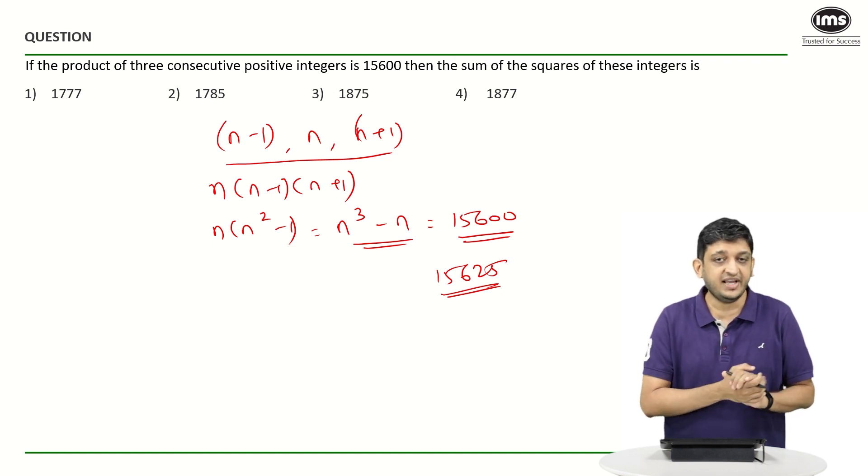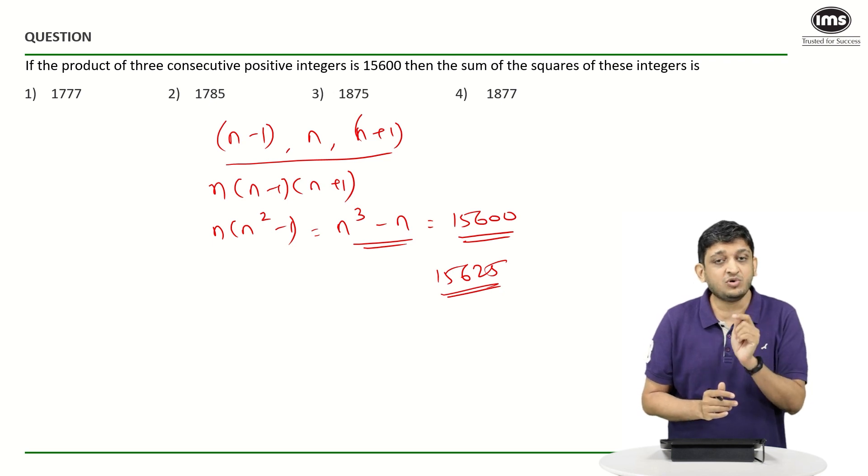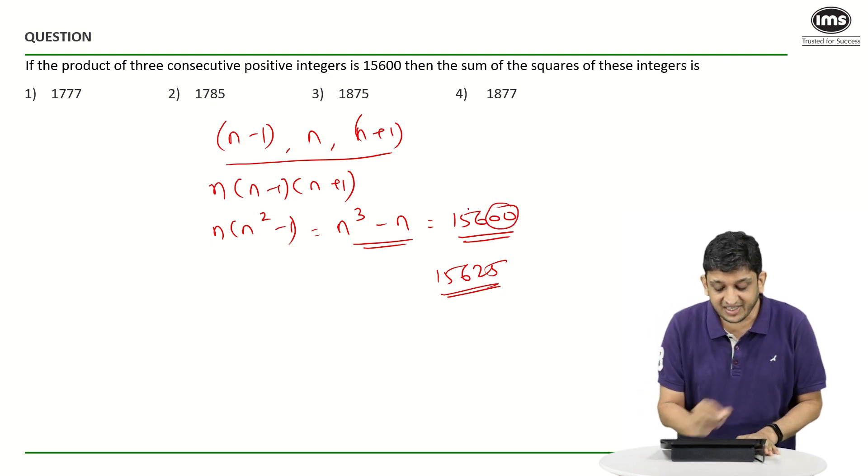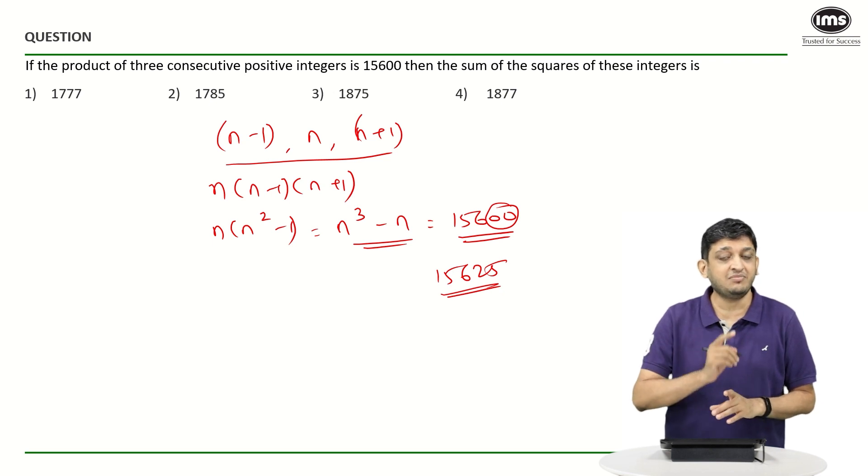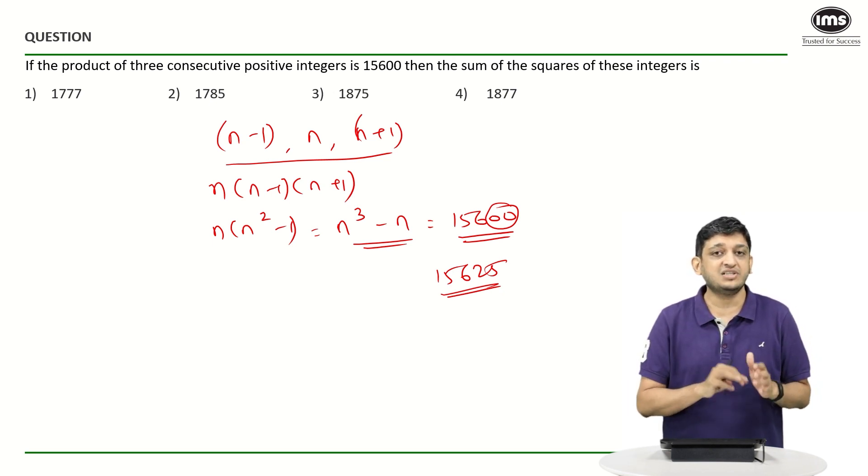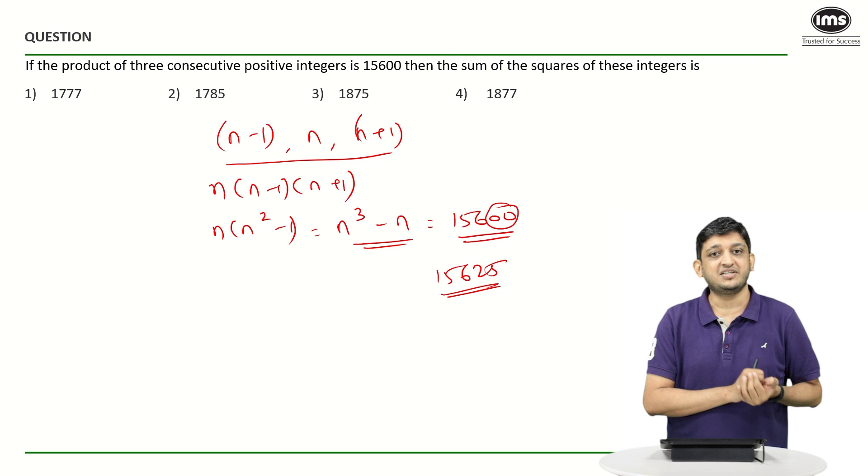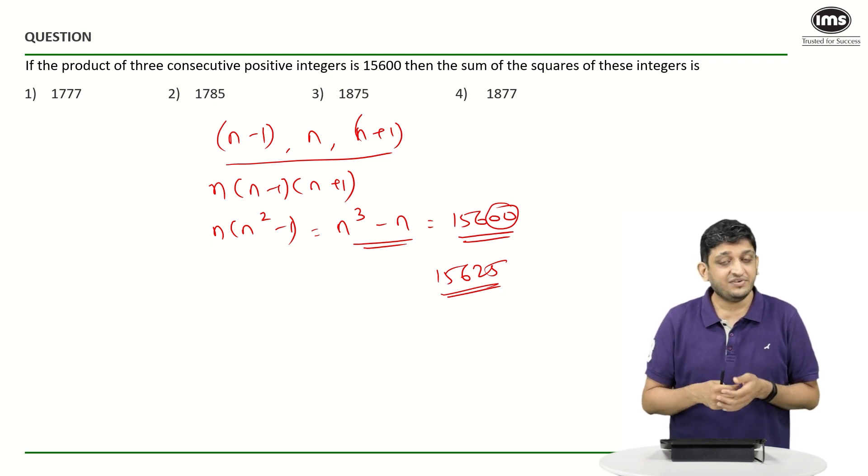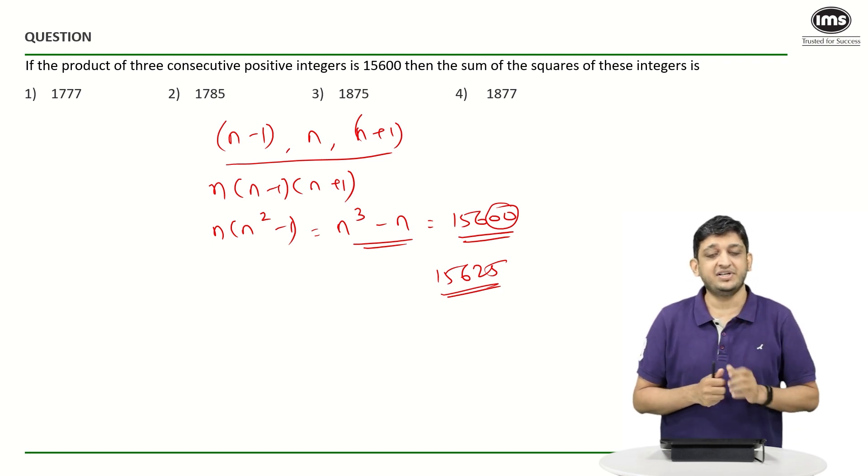Now we need two zeros at the end. How can we get two zeros at the end if you are multiplying three consecutive positive integers between 20 and 30? The only way to do that is if your product has a 25 in it.